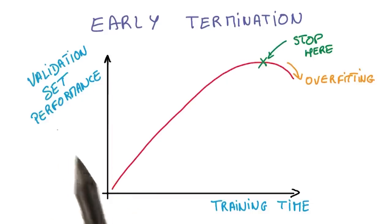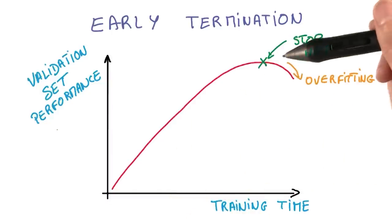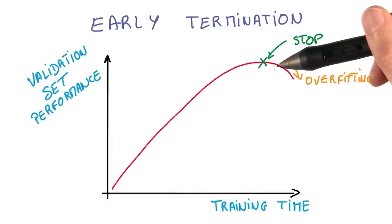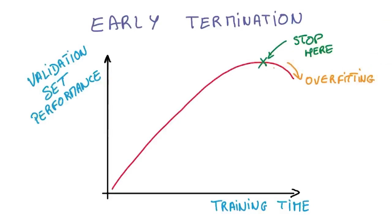The first way we prevent overfitting is by looking at the performance on our validation set and stopping to train as soon as we stop improving. It's called early termination, and it's still the best way to prevent your network from over-optimizing on the training set.